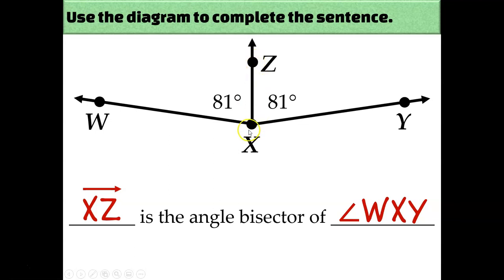Calling it ray ZX would be incorrect because that would imply that you're starting at Z and going to X and beyond with an arrow going down. And that's not what I see. So I have to call this ray XZ. And it's the angle bisector of angle WXY. WXY is the entire angle. It was cut into two 81 degree angles by ray XZ.